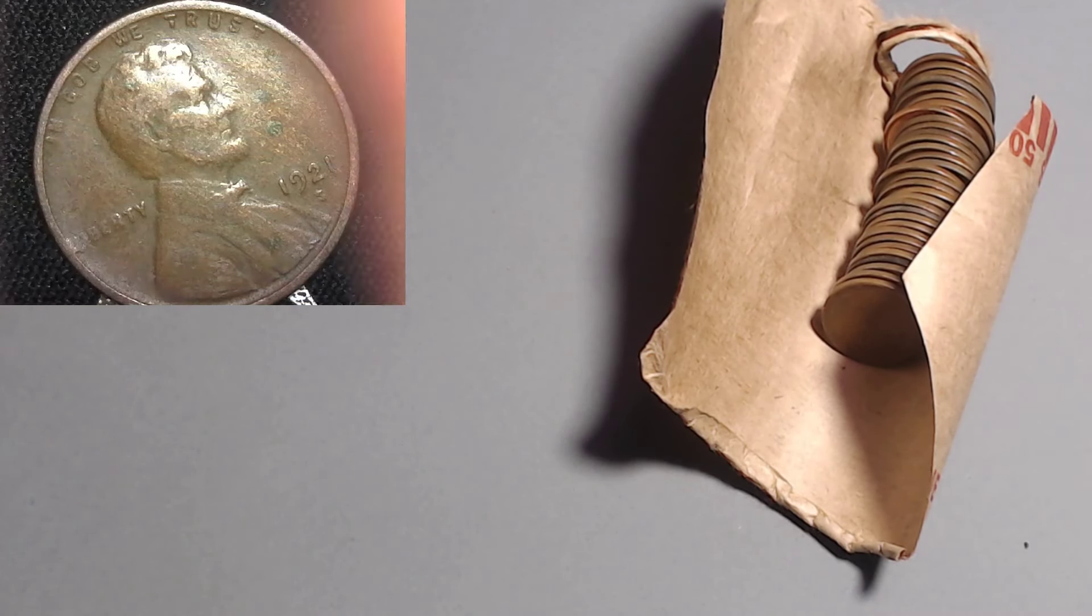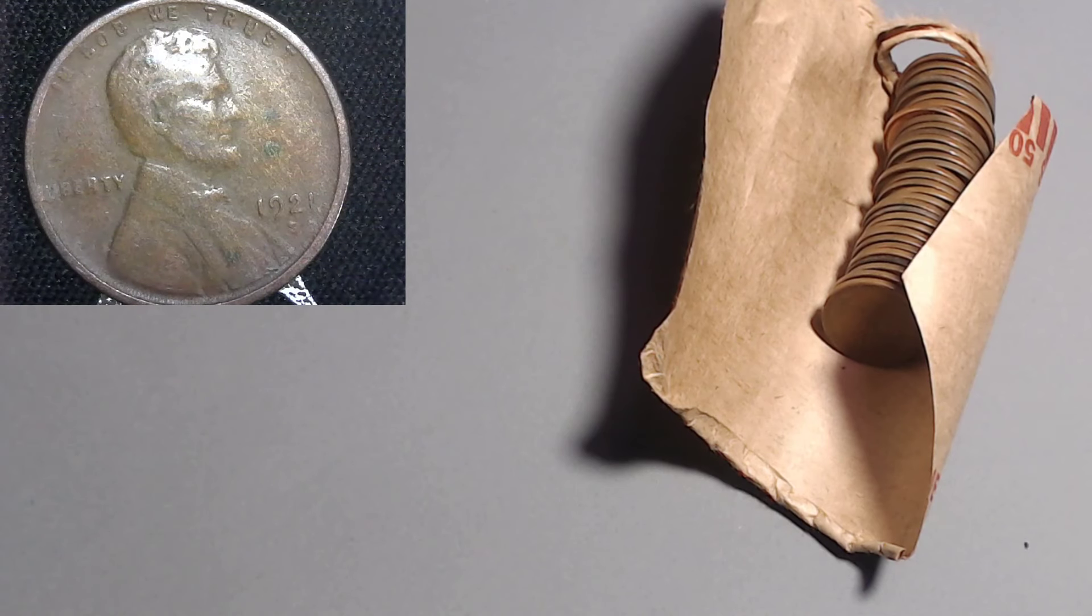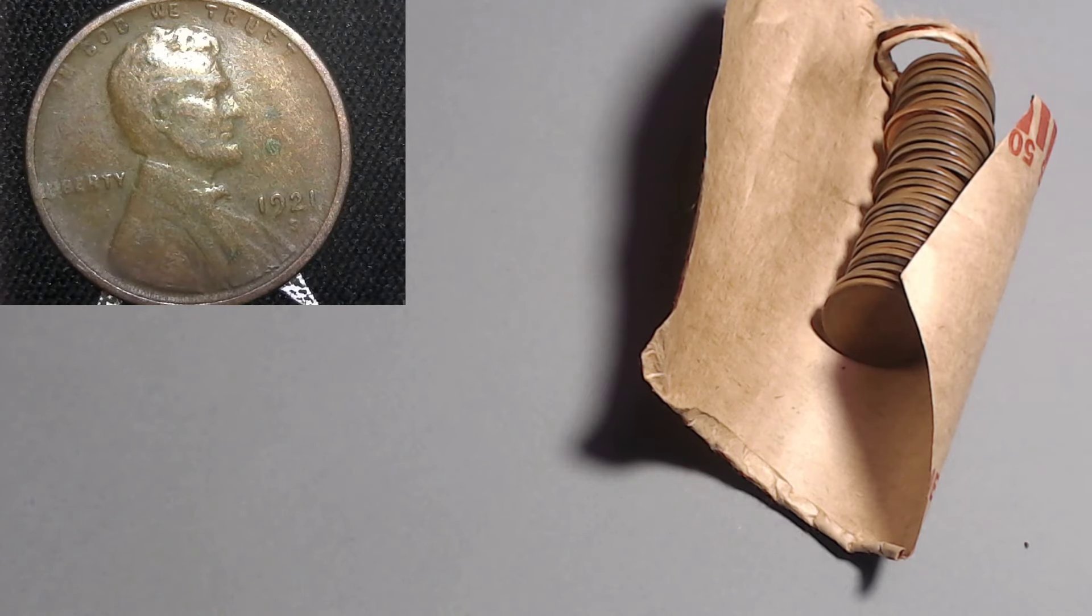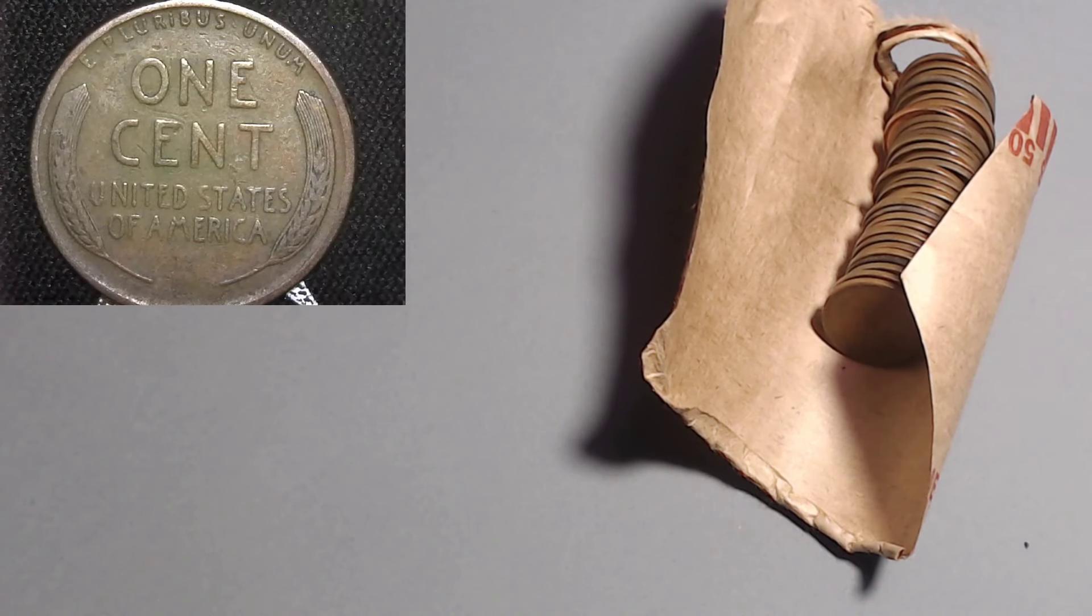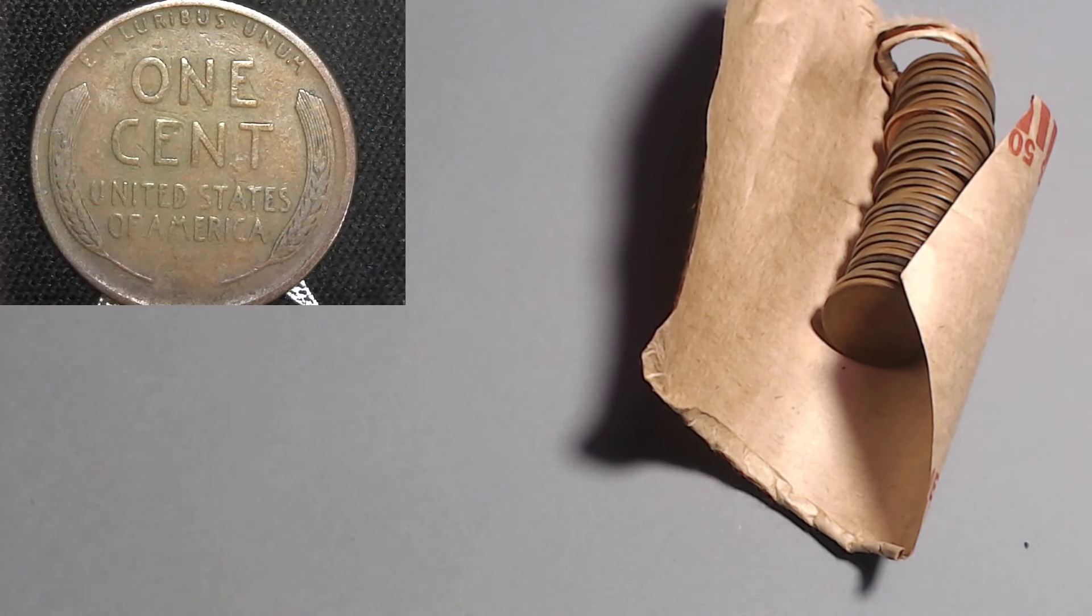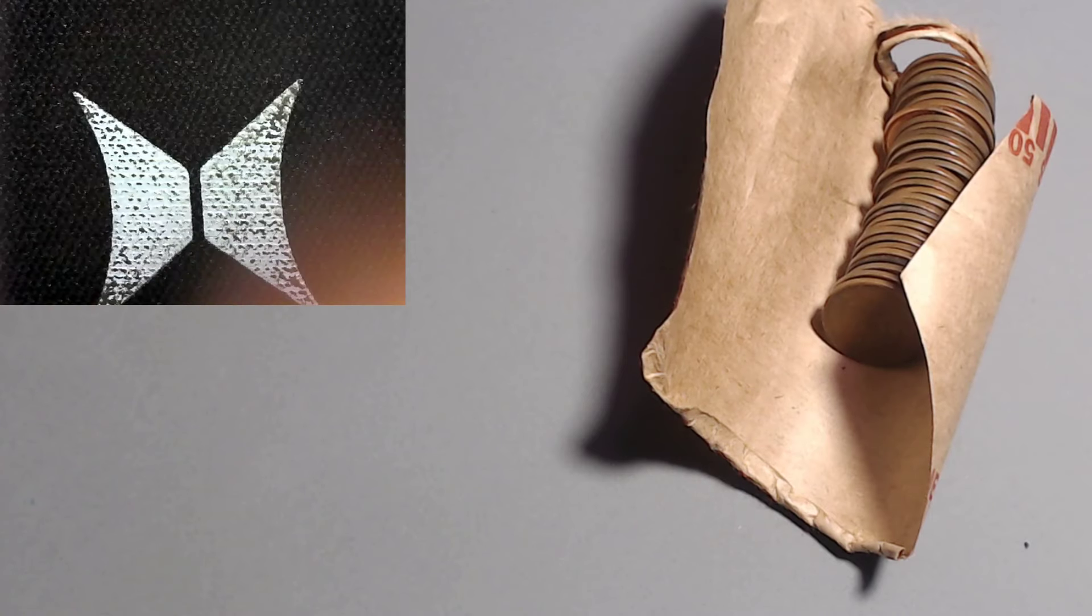And now we got a 1921 S. The 1921 S has 15 million. Wow. That is another key date for this roll. The 1921 S with 15 million. It has seen better days for sure. But I will definitely take that. This roll is really producing the key dates. I almost want to go a little slower.